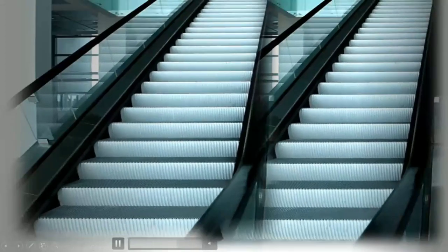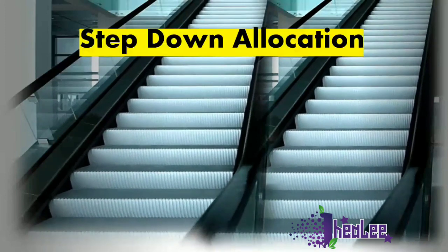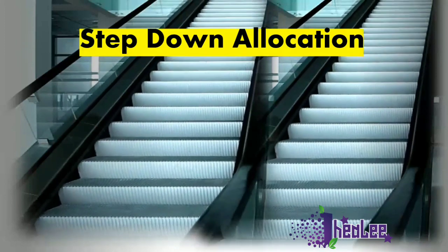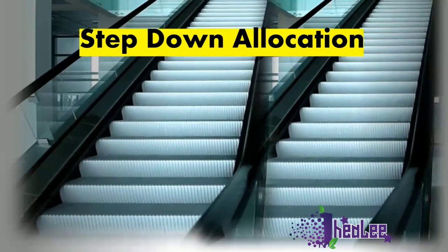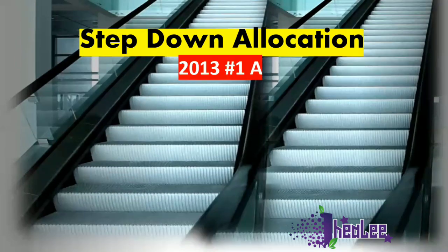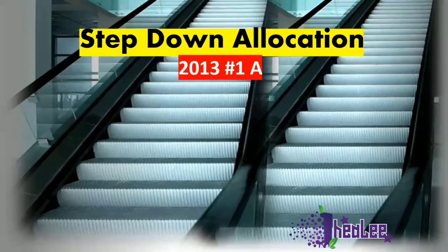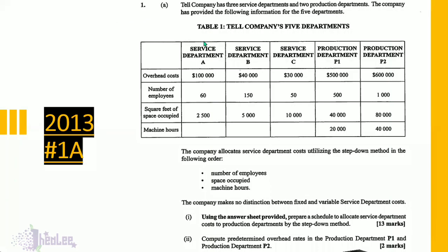Let's review the concept of the step-down allocation method, which is associated with service cost apportionment. The question is taken from Cape Accounting Unit 2, 2013 number 1A. Telcompany has three service departments — A, B, and C — and two production departments, P1 and P2.